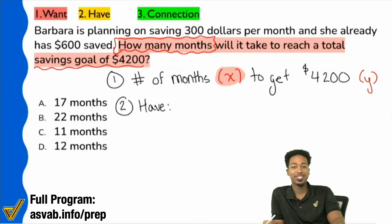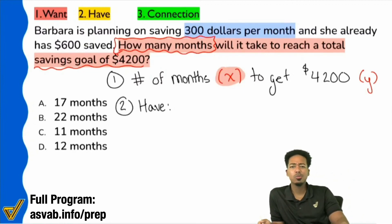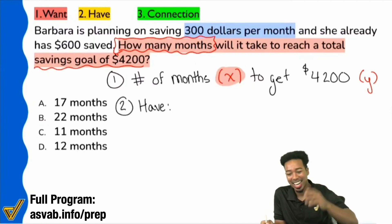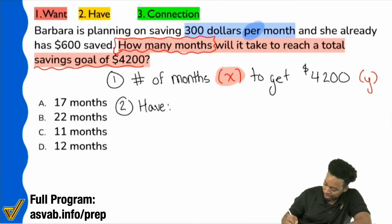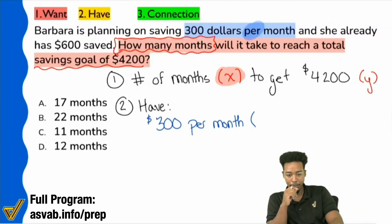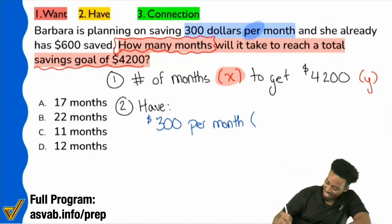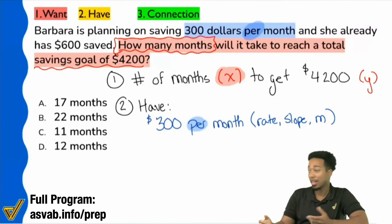Let's see who paid attention. $300 per month — is there any keyword in there you'd really want to highlight? Per, right? That word per gives it away. The word per gives it away. $300 per month — that is your rate, your slope, your M. Those all mean the same thing. The word per is really what gives it away.